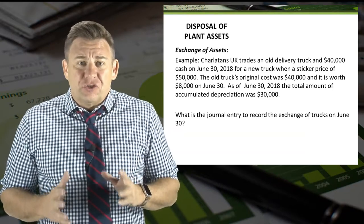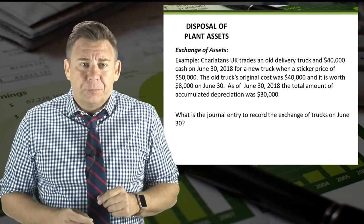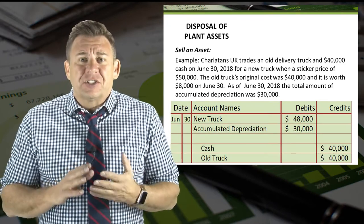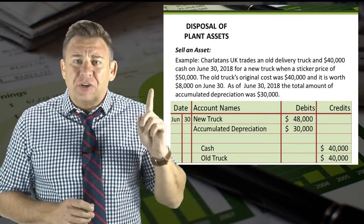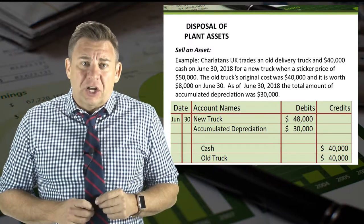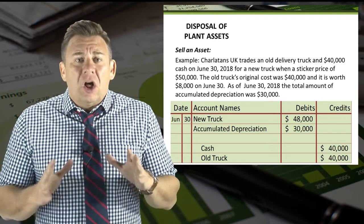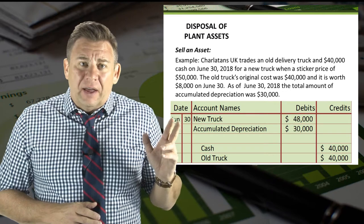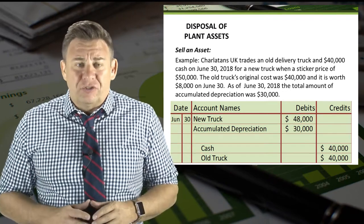Now let's record the journal entry to exchange these assets on June 30. The simplest way to record disposal of assets journal entries is to start with the accounts and amounts you know. In this case, we need to debit Truck — the new truck — for $48,000, which we calculated earlier. We also need to debit Accumulated Depreciation for $30,000. This will remove accumulated depreciation from our books.